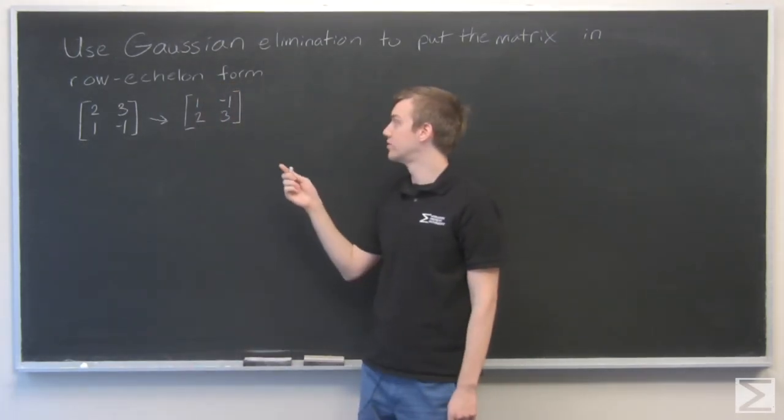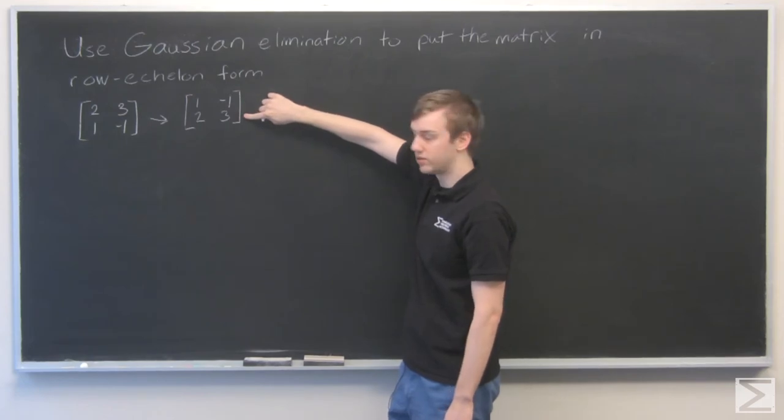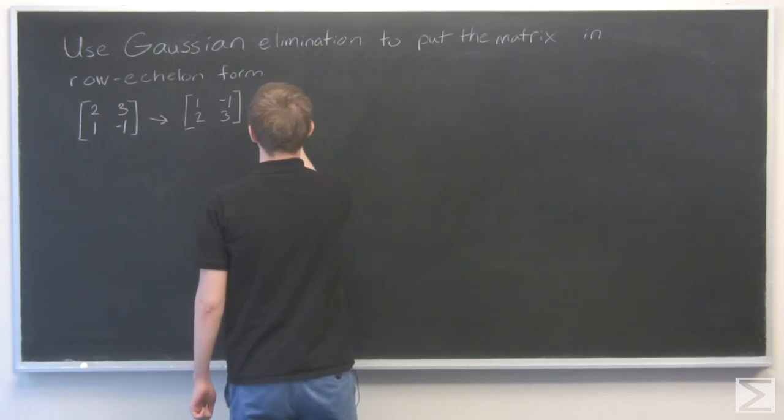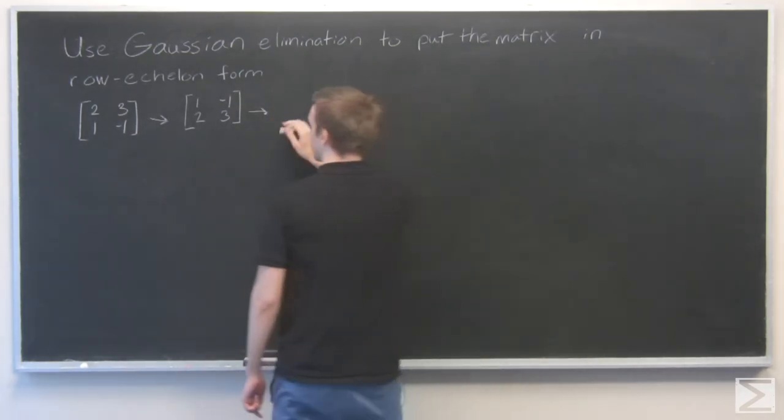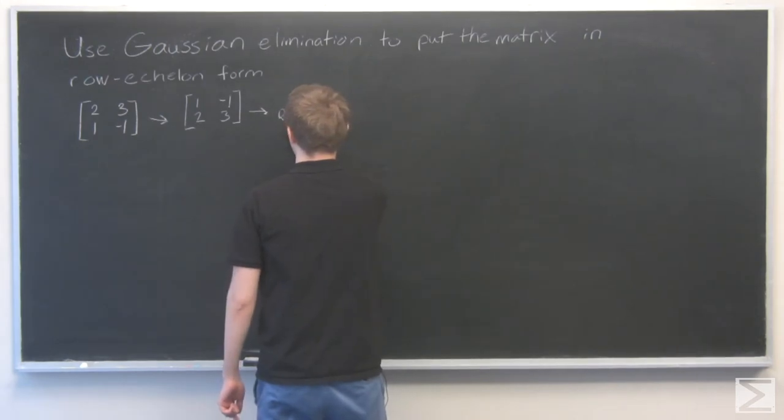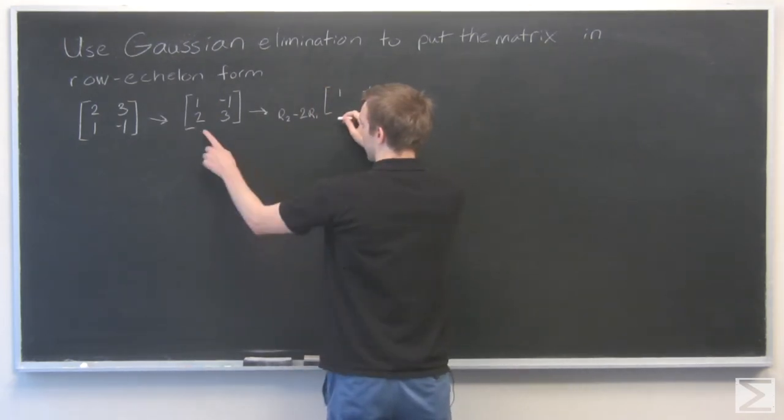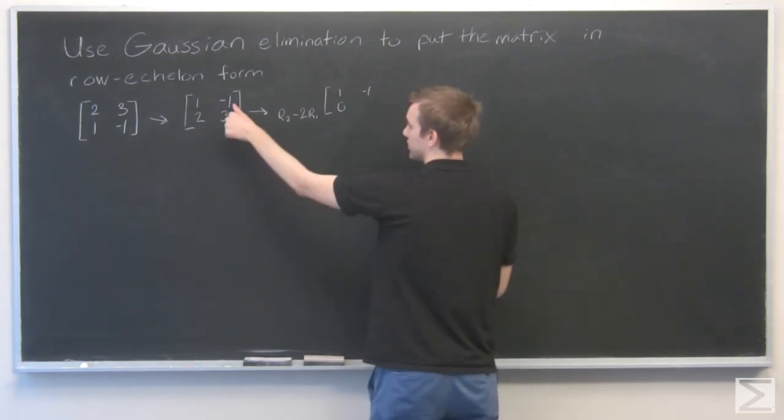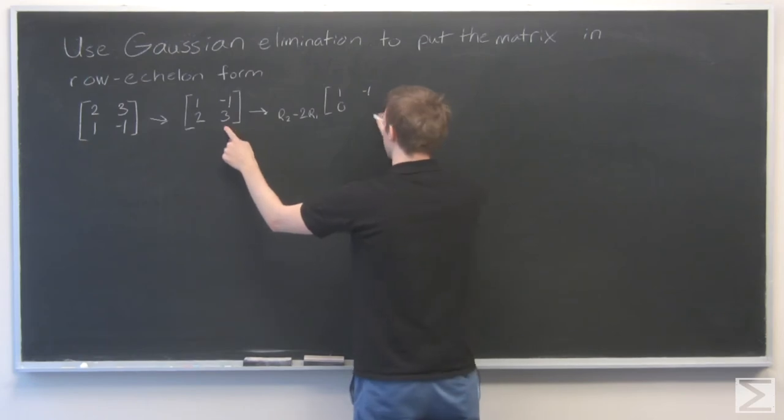Next I'm going to subtract this first row from this second row two times, so we'll get rid of that two. And I like to write on the side of my matrices what it is I'm doing. So I'm taking row two, subtracting two times row one. So one will stay the same, and two minus two times row one is zero. Three minus two times row one is three minus two times minus one, which is three plus two, which is five.